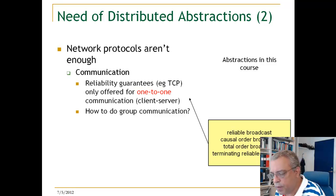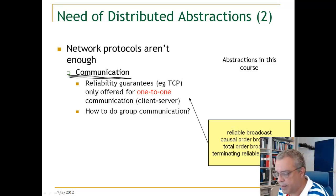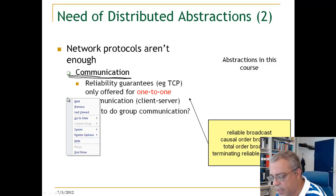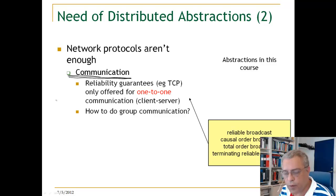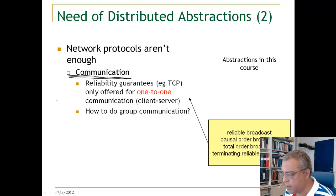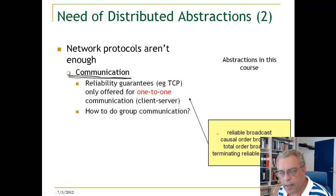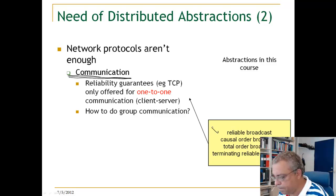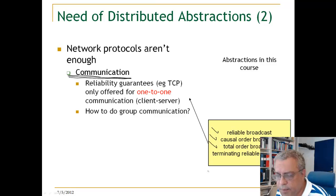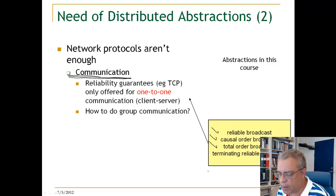What network protocols provide for us is primitives for communication. For example, TCP will allow us to provide reliability guarantees, but only for one-to-one communication between two machines — one is a client and one is a server. In this course we are going to look at abstractions that are useful for building reliable systems: reliable broadcast, causal order broadcast, total order broadcast, and other types of broadcast abstractions. These are many-to-many communication abstractions.